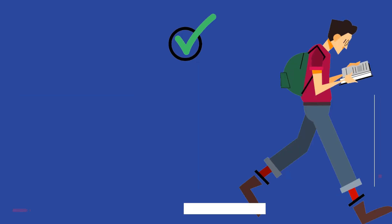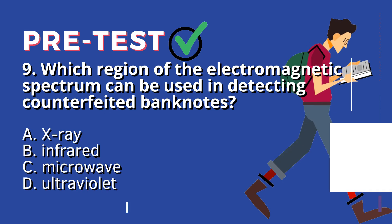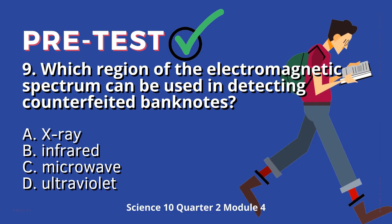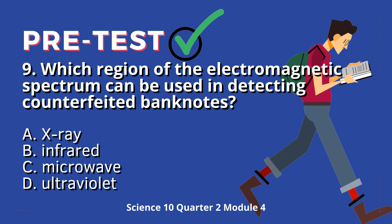Question 9: Which region of the electromagnetic spectrum can be used in detecting counterfeited banknotes? A. X-ray. B. Infrared. C. Microwave. D. Ultraviolet.